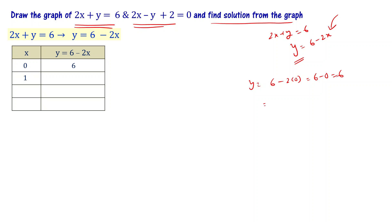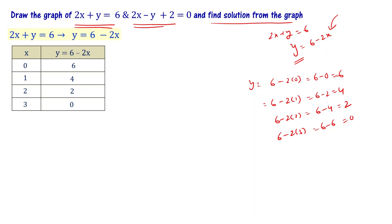For x equal to 1: y equals 6 minus 2 times 1, that is 6 minus 2, equal to 4. For x equal to 2: y equals 6 minus 2 times 2, that is 6 minus 4, equal to 2. For x equal to 3: y equals 6 minus 2 times 3, that is 6 minus 6, equal to 0.